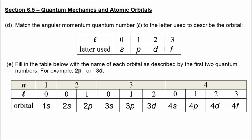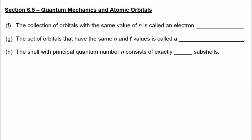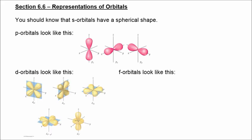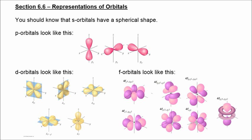You should be able to find these orbitals in terms of subshell on the periodic table. The collection of orbitals with the same value of n is called an electron shell; if they share both n and l values, it's called a subshell. If n is your principal quantum number, that's exactly how many subshells you have: one subshell when n equals 1, two when n equals 2, three when n equals 3, and four when n equals 4. S orbitals are spherical; there are 3 varieties of p orbital, 5 varieties of d orbital, and 7 varieties of f orbital.